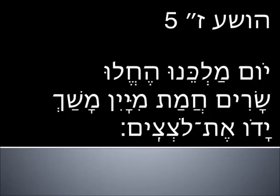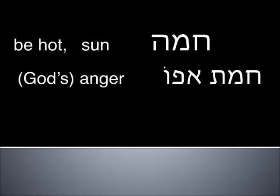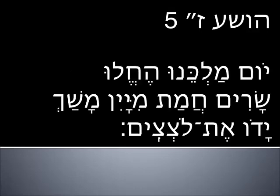In verse 5, 'Yom Malkinu' — the day of our king. 'Hechelu' from Choleh — going to make them sick. The princes will make them sick. And what kind of sick? 'Hamat miyayin' — like heat. 'Hamat Apo' — God's anger is referred to like this. Hamah is another word for the sun because it's warm. They're inflamed with wine, becoming sick because they're inflamed with wine.